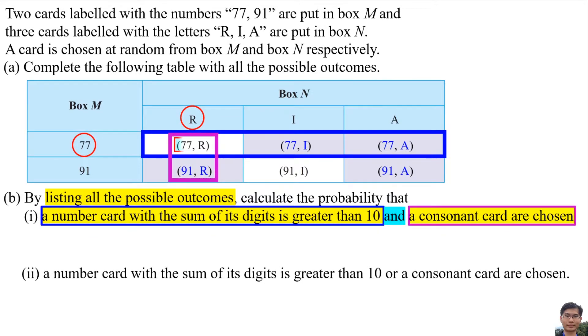N means the possible outcome is inside the two overlap rectangles. Let A represent these 2 events. So the element of set A is 77, R. So the probability of event A is the number of elements in set A divided by the number of elements in sample space.